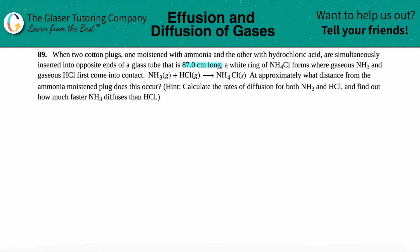The question is asking, at approximately what distance from the ammonia moistened plug does this occur? The hint says to calculate the rates of diffusion for both NH3 and HCl and find out how much faster NH3 diffuses than HCl. So the question is asking what distance will ammonia come into contact with the HCl when they're added into this gas tubing.